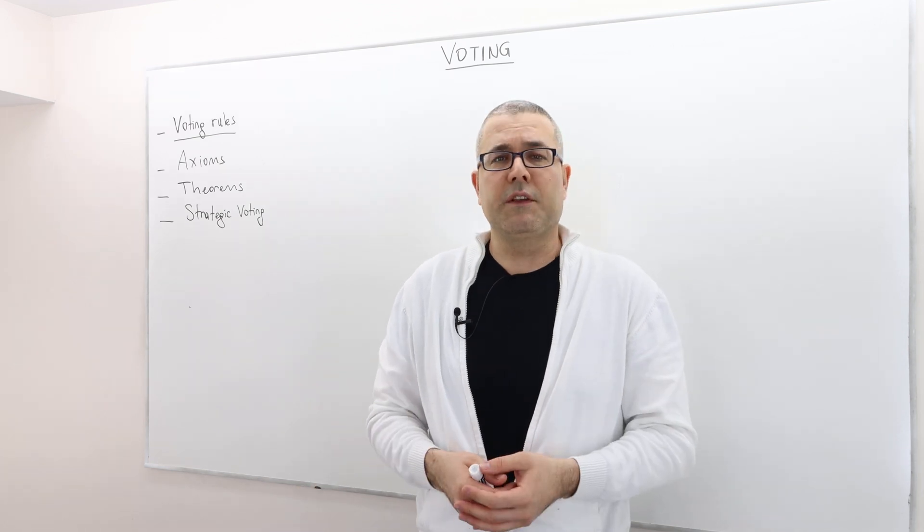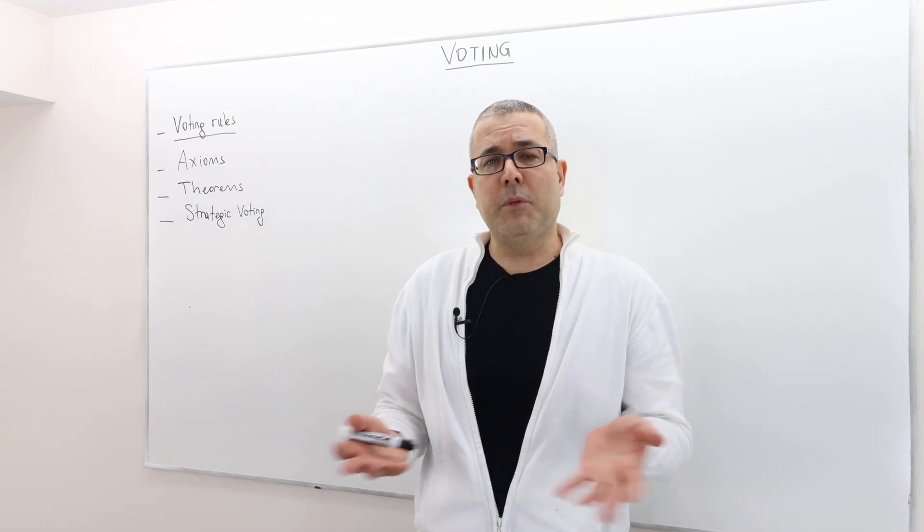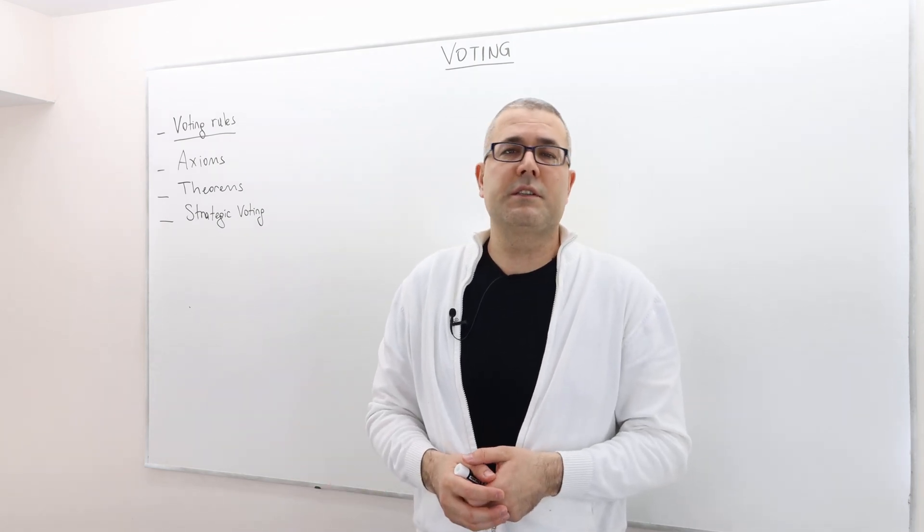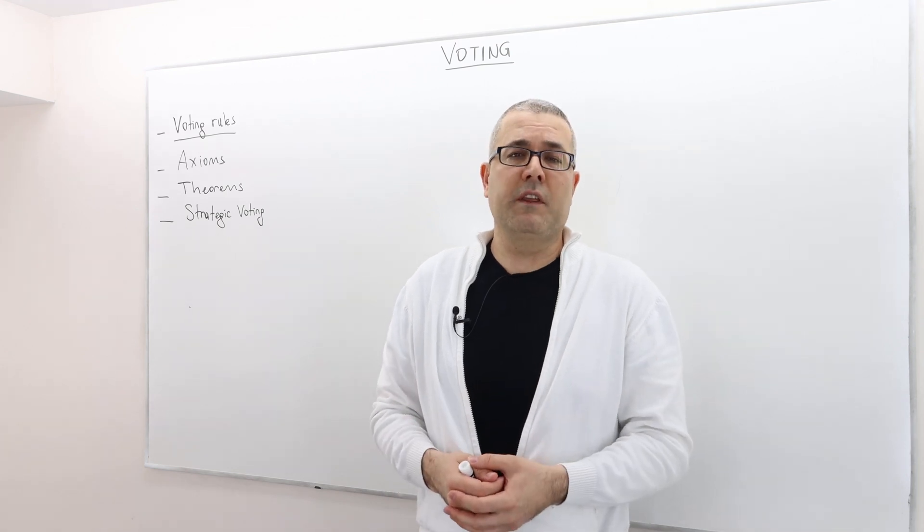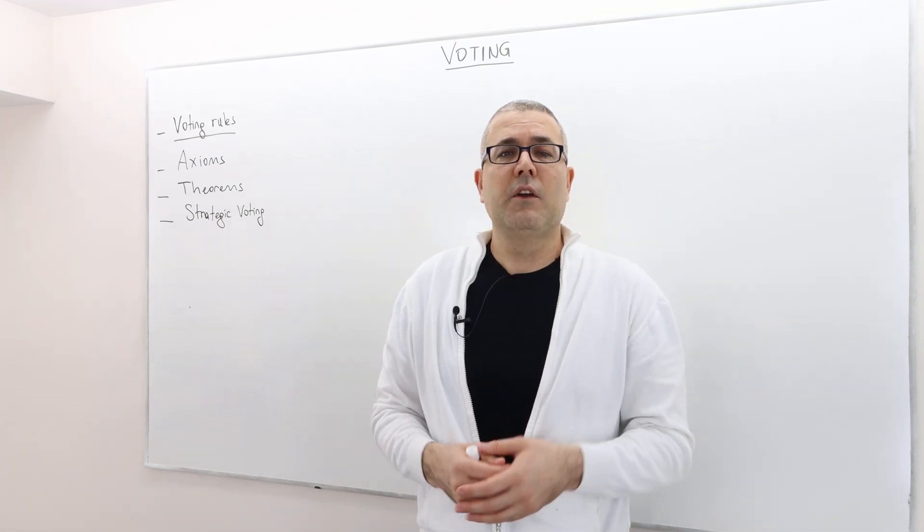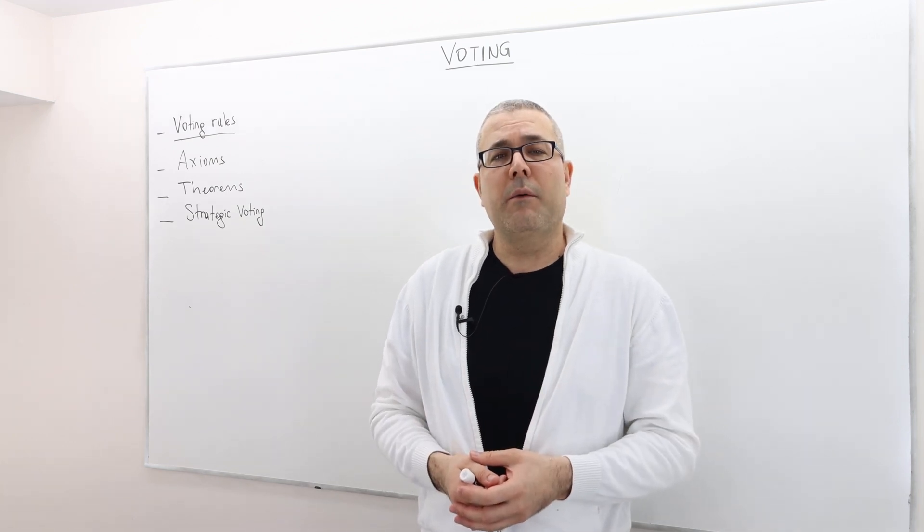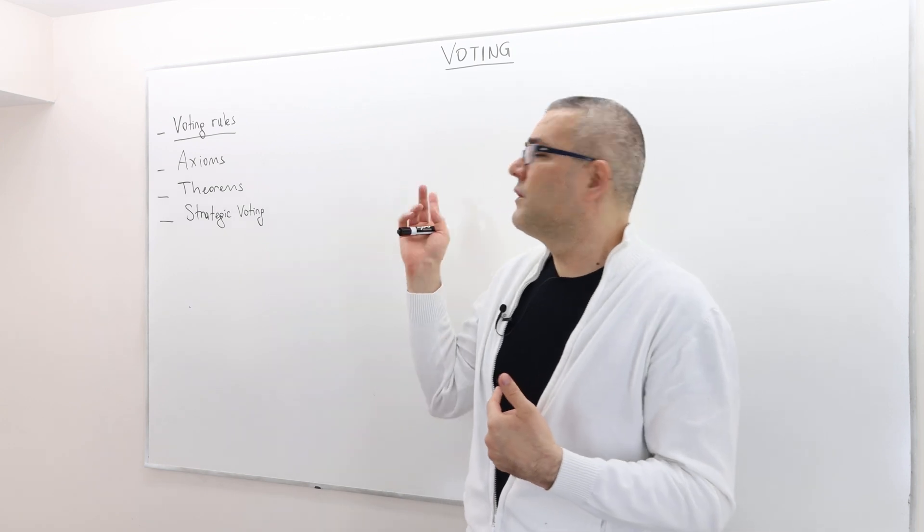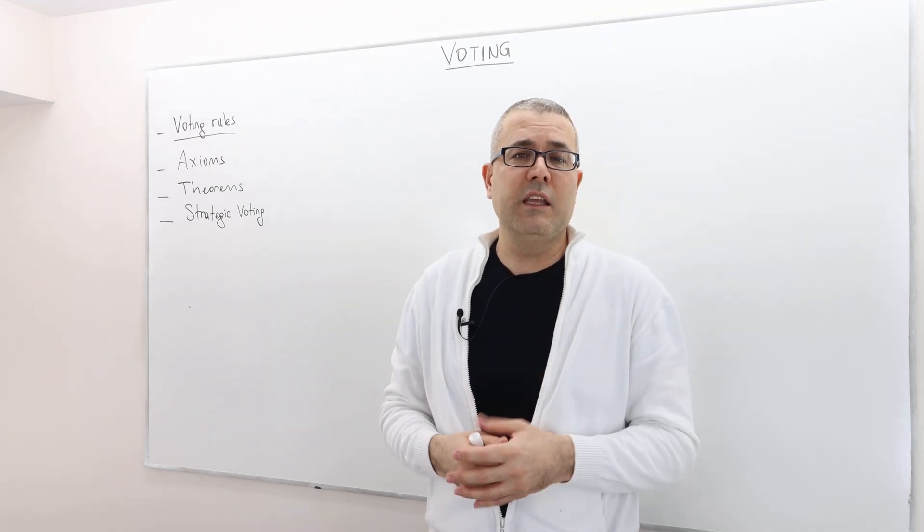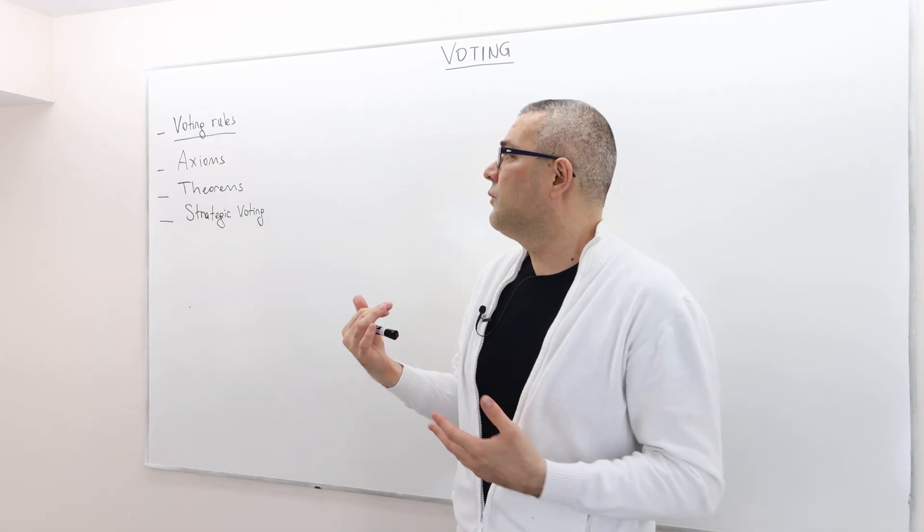Almost all democratic countries elect their politicians through voting. The people, the voters, actually select one or some of the candidates through some rules, some voting rule. In this chapter we are going to talk about some highly used and well-known voting rules.